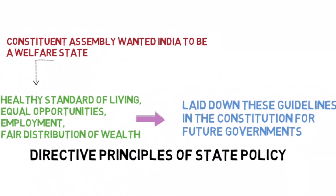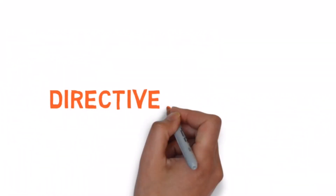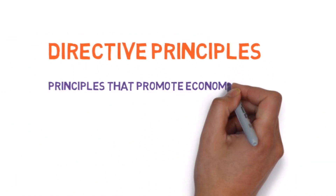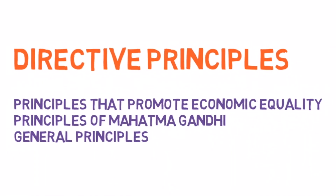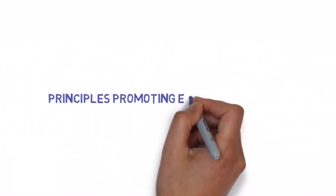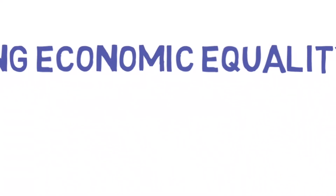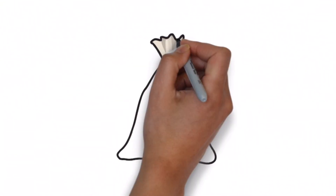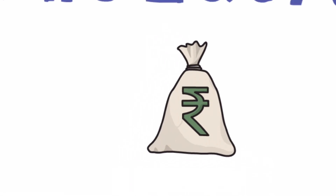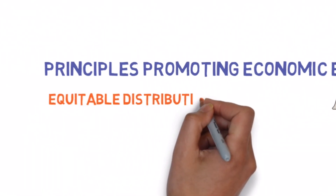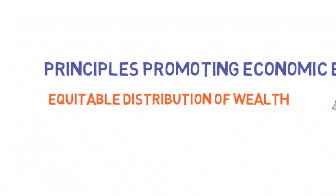They are classified into three categories: principles that promote economic equality, Gandhian principles, and general principles. Let us look at the first one — principles promoting economic equality. The governments are suggested to make and enact laws to ensure the following rights for the citizens of India, like fair and equitable distribution of wealth and material resources of the country.